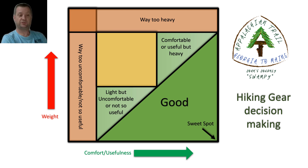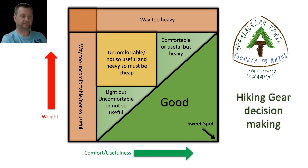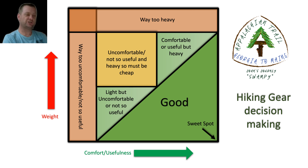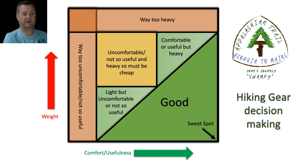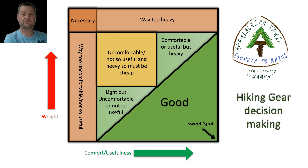Generally we choose the heavier-but-comfortable option if we can't find something in the good area. Then there's a third area that's uncomfortable or not so useful and actually a little bit heavy — we choose that because it's probably cheap or we can't afford something in the good area. There's one last area up in the top corner: stuff that's heavy or uncomfortable but we just can't avoid it because it's necessary.